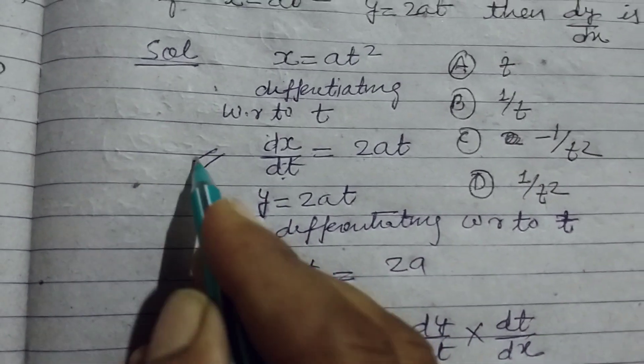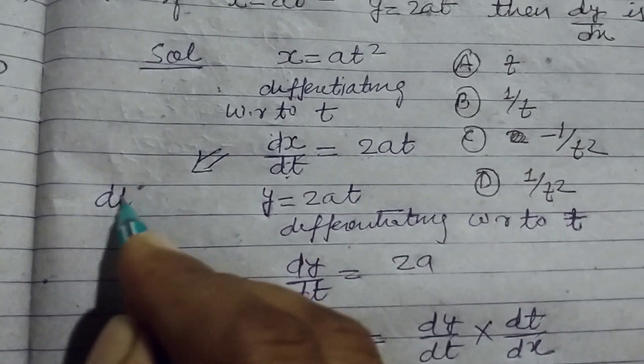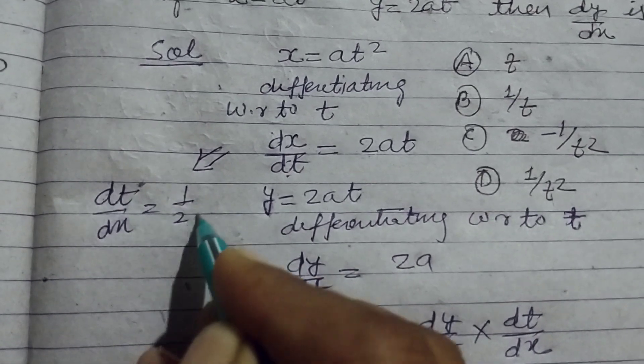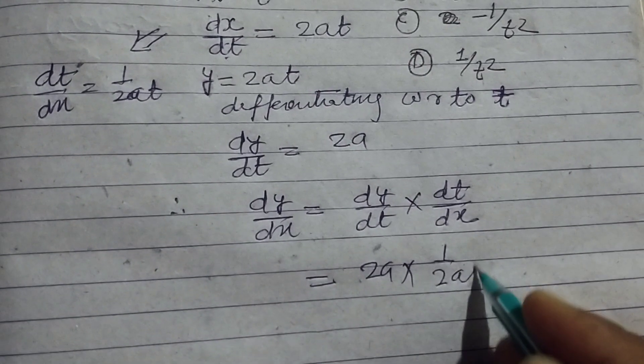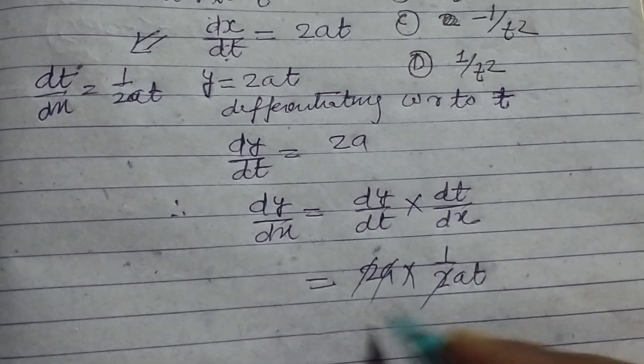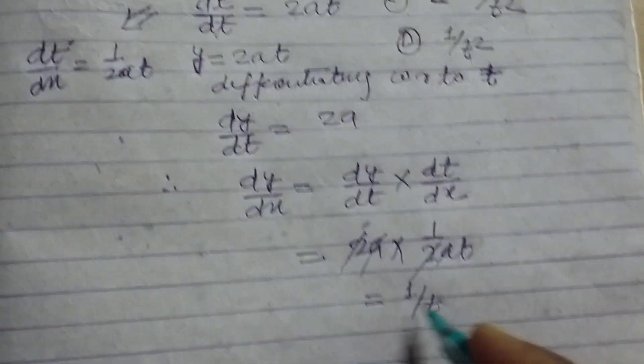Therefore, dt/dx is 1 over 2at. So this is 1 over 2at times 2a; the 2a cancels and we get 1 over t.